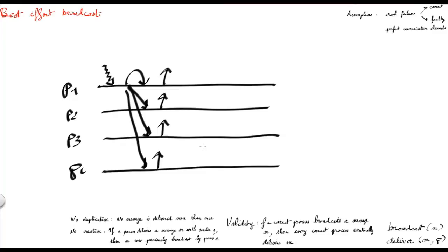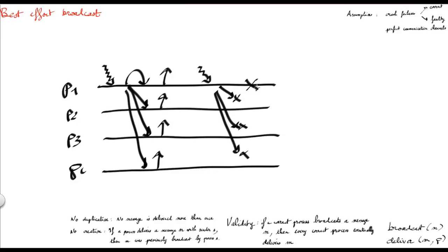Notice that this protocol doesn't guarantee anything when the broadcaster is faulty. For example, p1 has a message to broadcast. When asked to broadcast, it will send the message to all other processes, but now p1 is faulty. The message may not be received by other nodes — it could be dropped by p1 itself or by the switch connecting p1 to others. Since p1 is not correct, its messages won't be delivered by other processes, as the perfect channel assumption only ensures delivery for messages sent by correct processes.